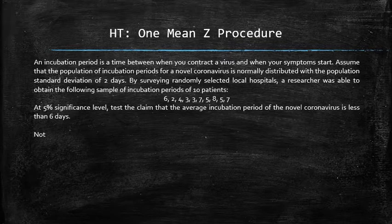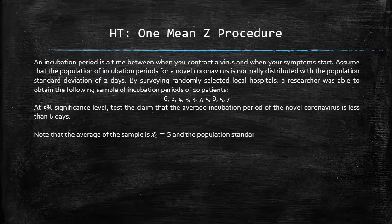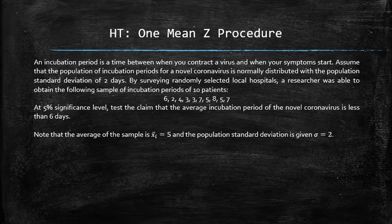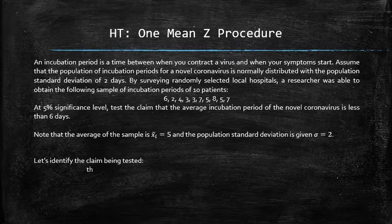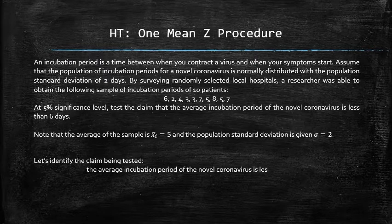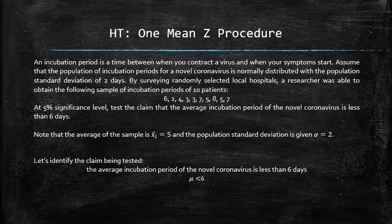First, let's note that the average of the sample is 5, and the population standard deviation is given and is 2. Now, let's identify the statistical claim that needs to be tested. The claim is that the average incubation period of the novel coronavirus is less than 6 days. The keyword 'average' suggests that the claim is about the parameter mu, so we can symbolically express the claim as mu less than 6. Since the claim is about the population mean and the standard deviation is known, we will use the 1-mean-z procedure.